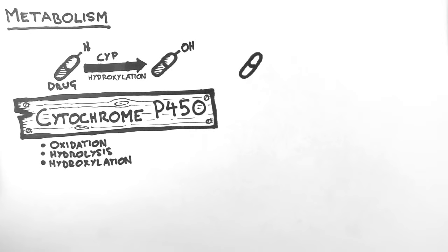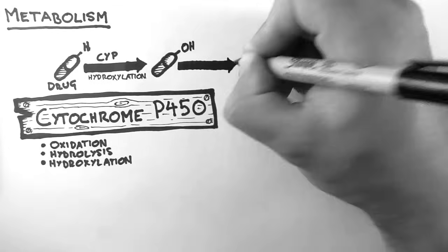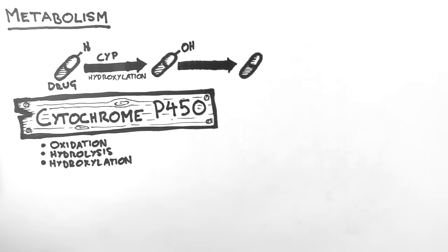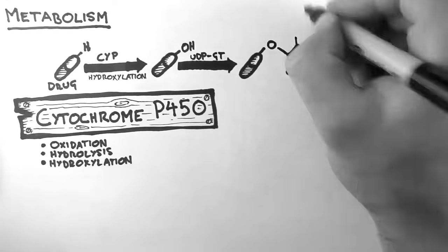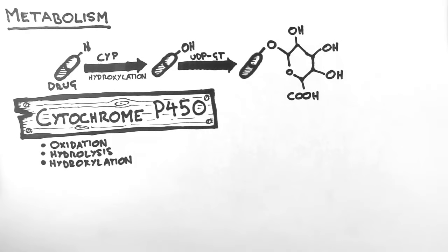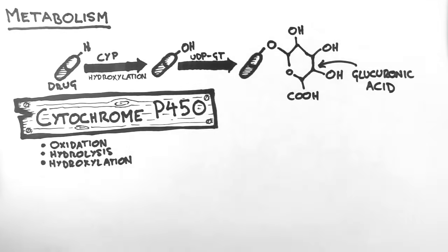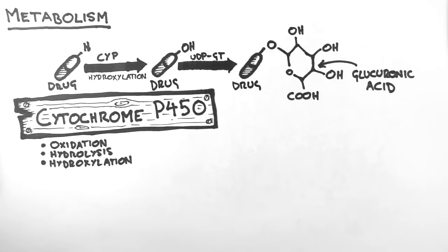But metabolism doesn't stop there. The presence of this new hydroxyl group creates a target for much larger molecules to be attached. There are many enzymes which can act upon this newly formed group. Here we will look at a common one, UDP glucuronosyl transferase. Through its action, a large glucuronic acid group is attached to the drug. This is the same process that happens in bilirubin metabolism.